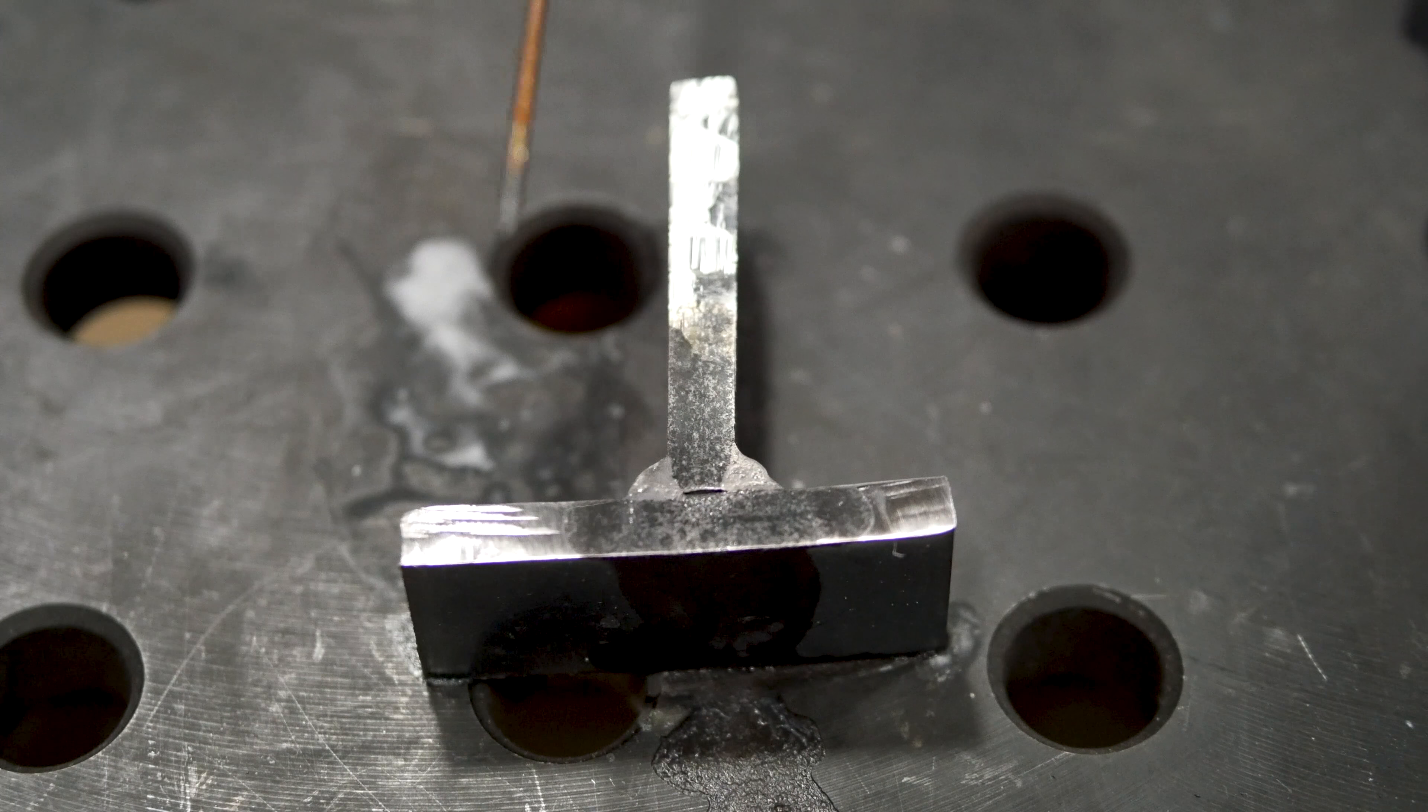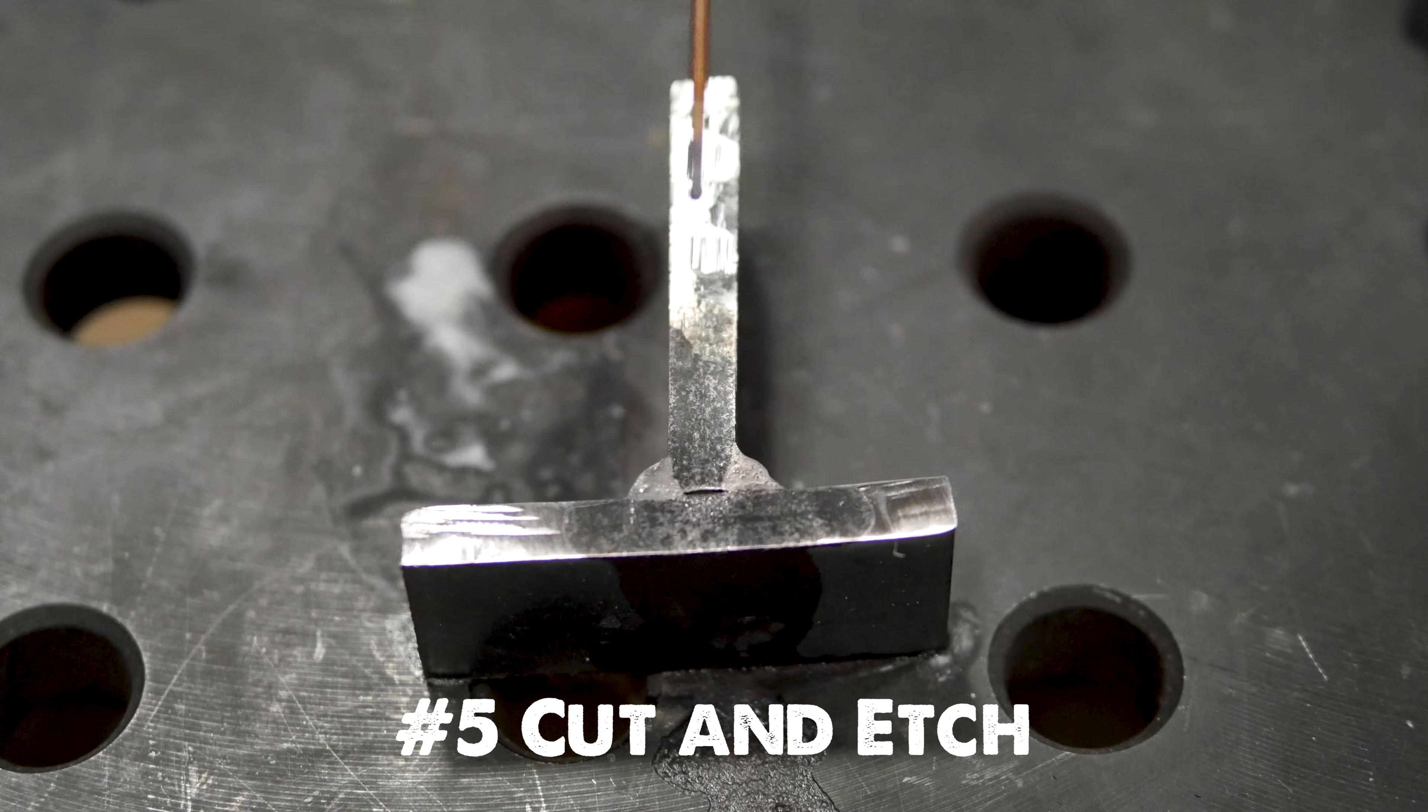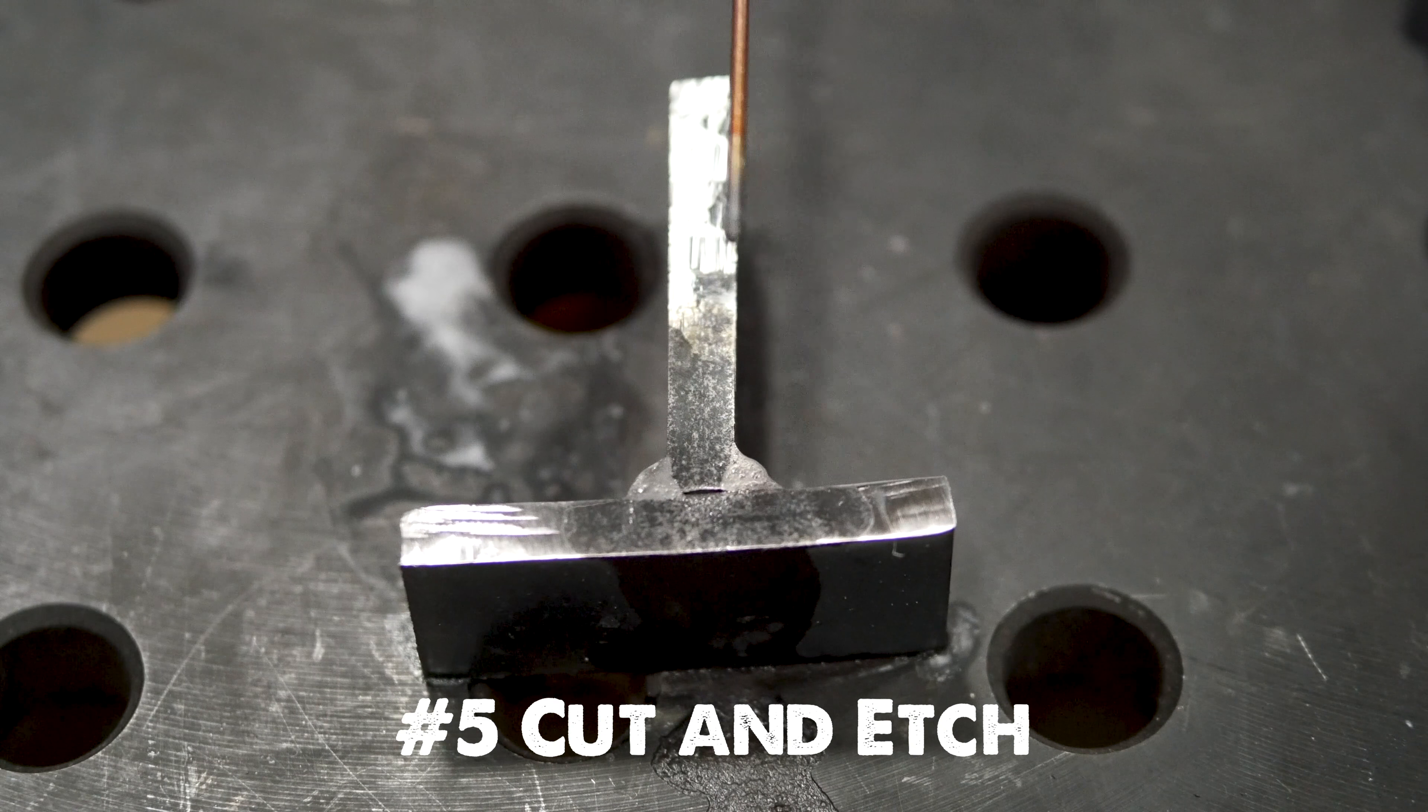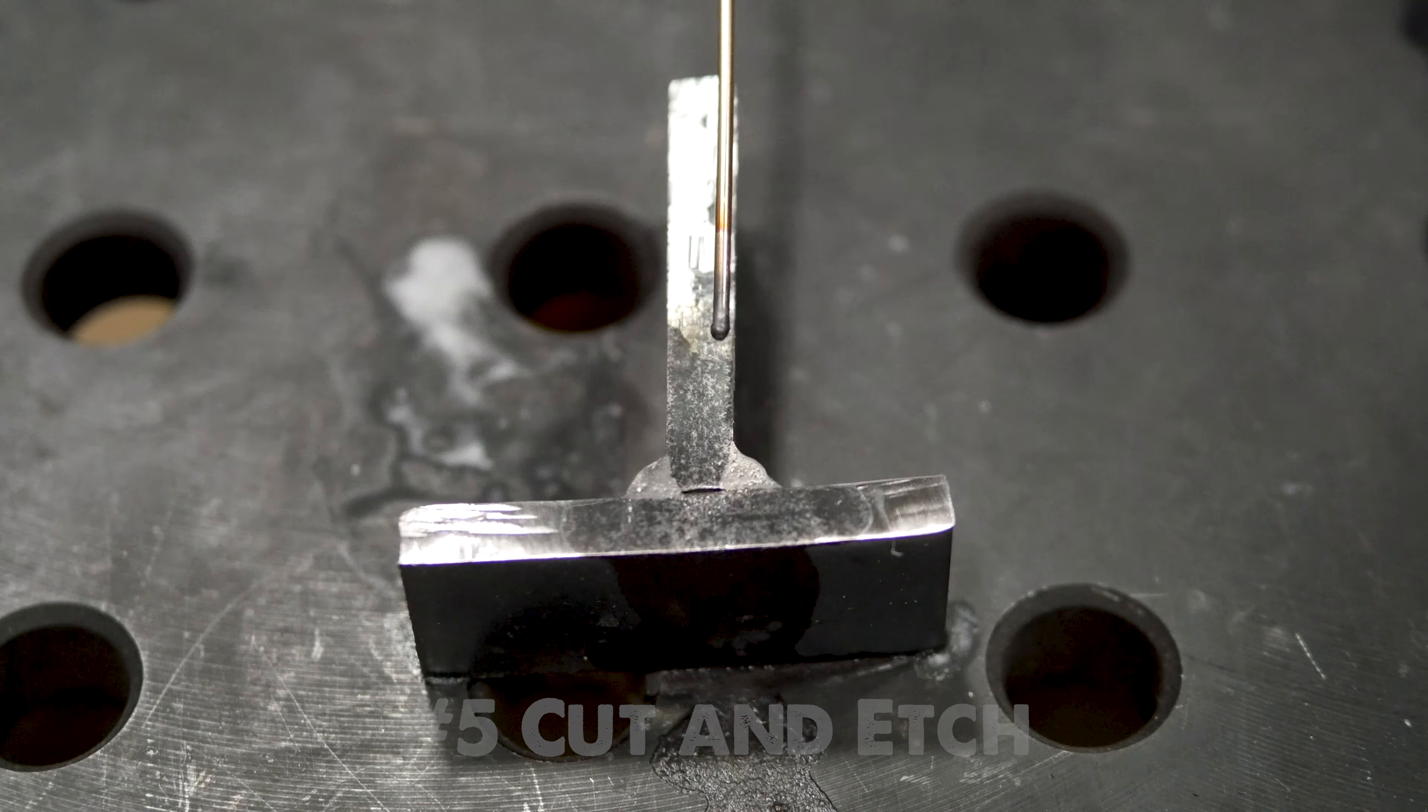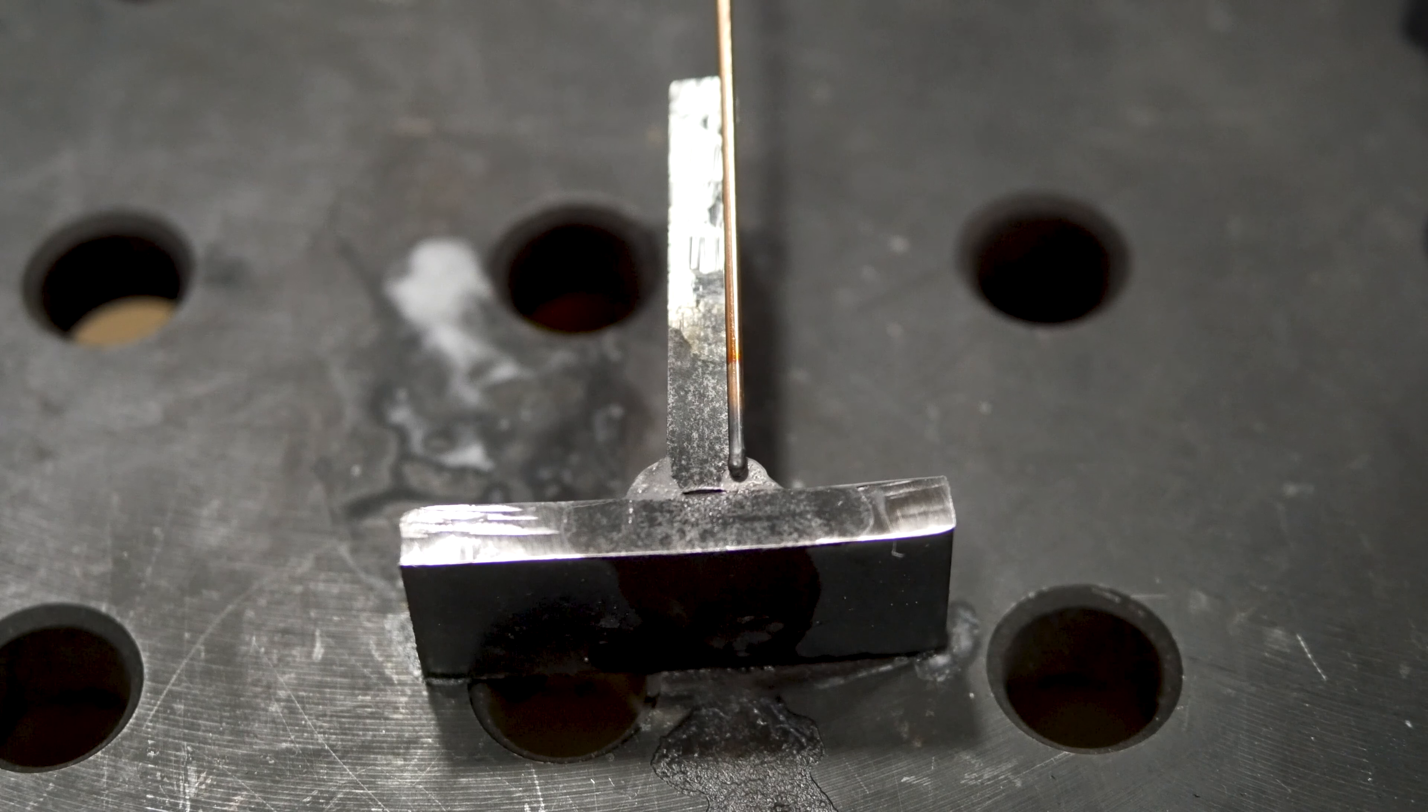The fifth and final way to know if your weld is good is doing what's called a cut and etch. Now this is where you would set your machine up for the parameters that you're planning on running and get a scrap piece of the base metal thickness that you're using and do a couple of beads.